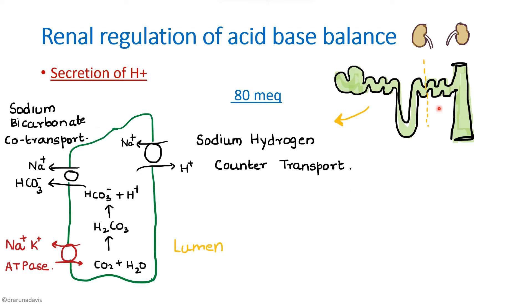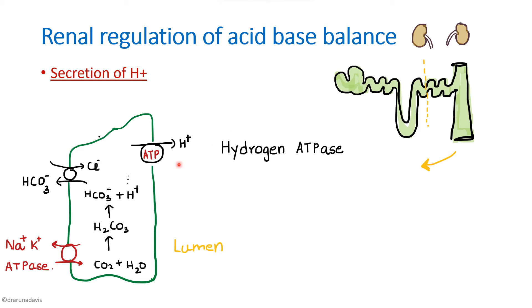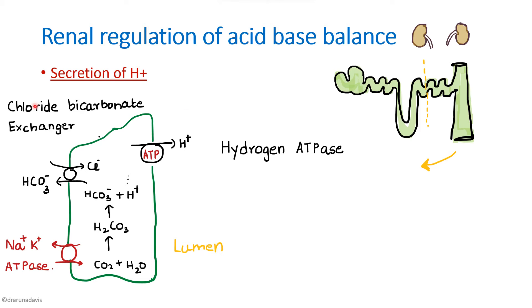In the later part of the tubule, H+ is secreted by a different pump called H+ ATPase (hydrogen ATPase), making it primary active transport. To reabsorb bicarbonate in this segment, there is a channel called the chloride-bicarbonate exchanger. So the mechanism is different in the early versus the late part of the nephron.